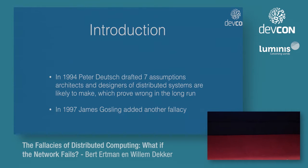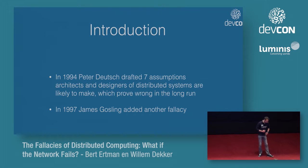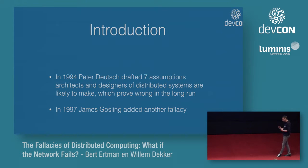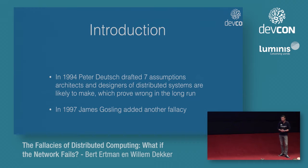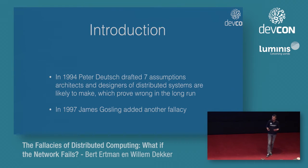Back in the day — 1994 to be precise — a guy called Peter Deutsch at Sun Microsystems wrote up the seven fallacies of distributed computing. And as 1994 seems like way back for most of us, Peter Deutsch was probably never more right with those fallacies than today. These fallacies are about assumptions that architects, designers, and developers make about networked systems. A couple of years later, James Gosling — the father of Java — added another fallacy, making it a list of eight.